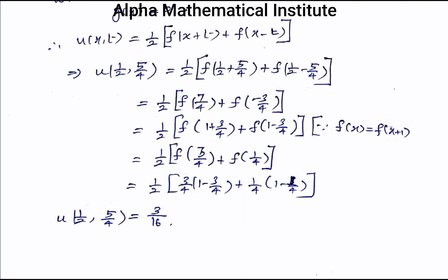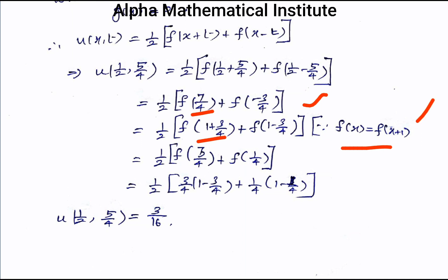We need to calculate u(1/2, 5/4), which equals (1/2)[f(1/2 + 5/4) + f(1/2 − 5/4)] = (1/2)[f(7/4) + f(−3/4)]. Now 7/4 can be rewritten as 1 + 3/4. Using the periodicity formula f(x) = f(x − 1), we can reduce these arguments.